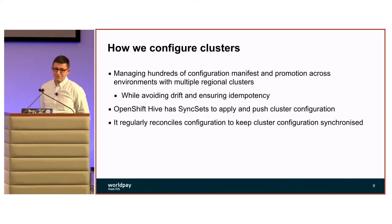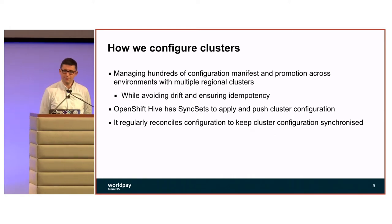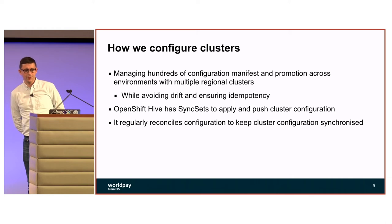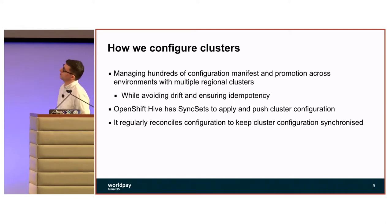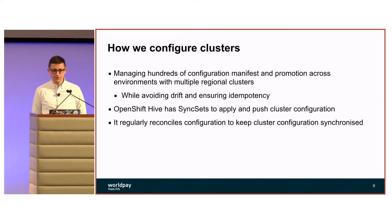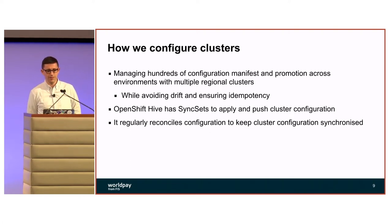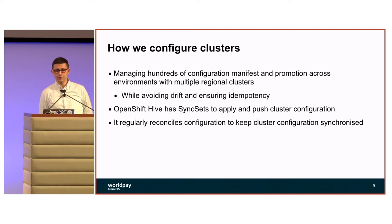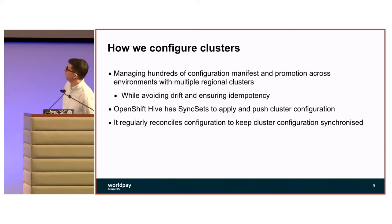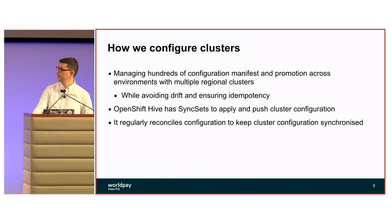We created an OpenShift 4 cluster with Hive — but what comes next? How do we manage the configuration of these clusters? This was the day two operations challenge. How do we manage hundreds of configuration manifests across multiple clusters and handle promotions? The biggest problem we faced from OpenShift version 3 is how do we avoid configuration drift. Hive helped us by using SyncSets, which regularly reconcile the configuration of all our subscribed clusters and keep them synchronized. Matt will now show you how we use SyncSets with Hive.